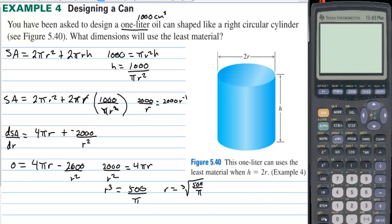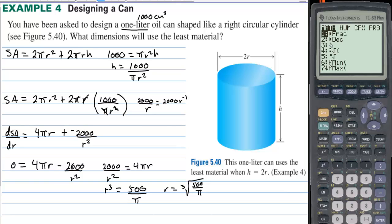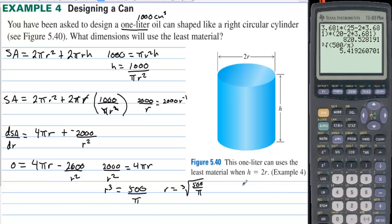Let's find out what that value is. Using the calculator's cube root function: the cube root of (500/π) gives approximately 5.419 centimeters. We need to make sure we're answering the question about what dimensions will use the least material.